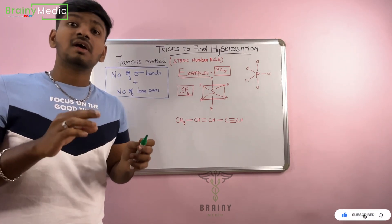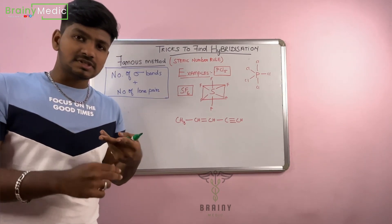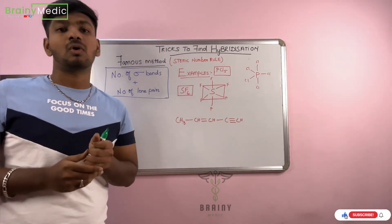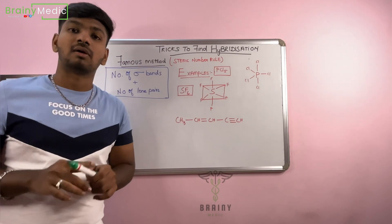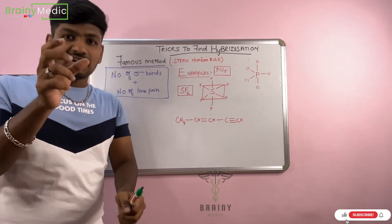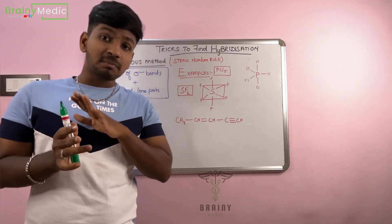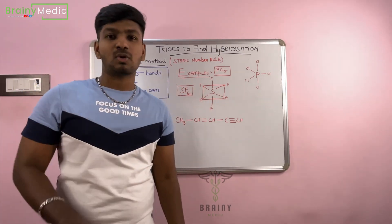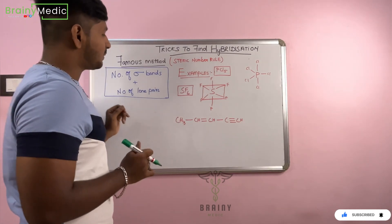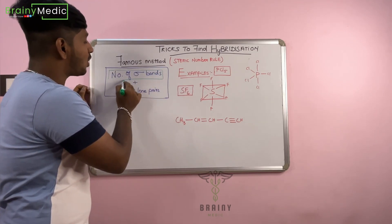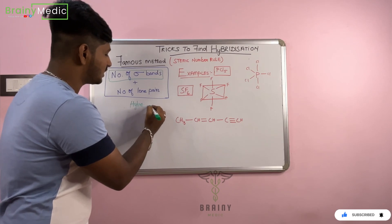The easiest method: if you have a structure, you can use it. Now I have a question — what does hybridization mean? Why do you try to do shapes and geometry? We have a conventional method. First, number of sigma bonds plus number of lone pairs — if you add the two, that is the hybridization number.